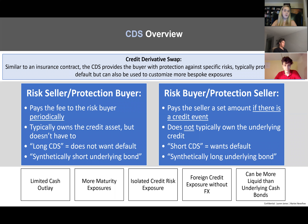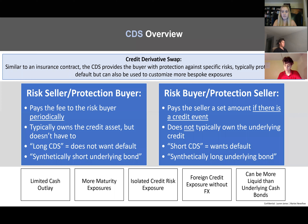When you are buying protection, you pay a fee along the way so that when the default happens you get paid — you are short the bond because you want it to default. You don't physically short the bond the way you would a stock; you can't physically short a bond. This gives you a way to get that same risk exposure where you also want it to default, just like you would if you were actually short a bond.